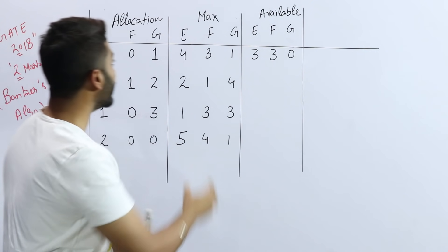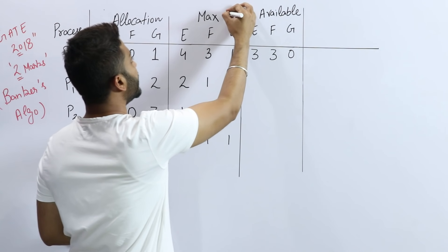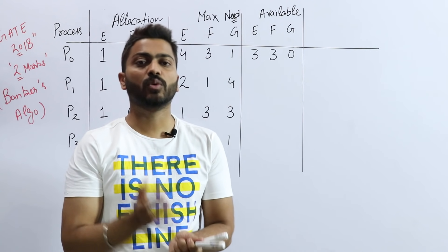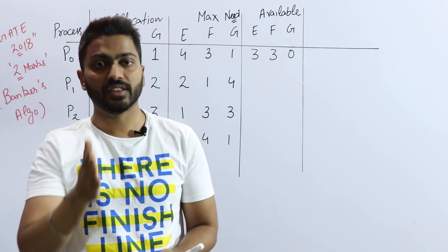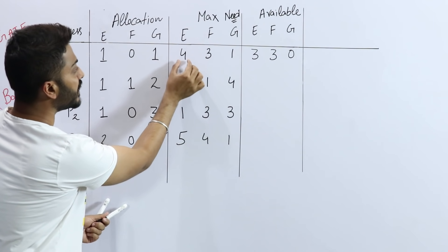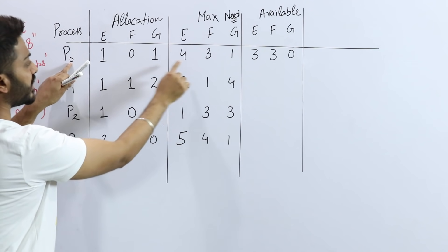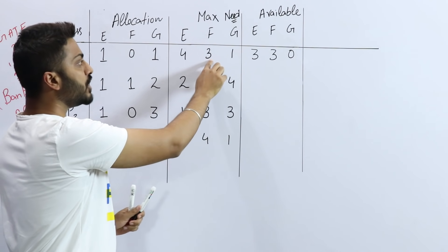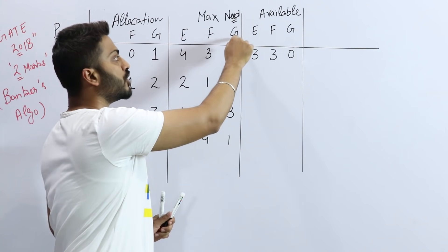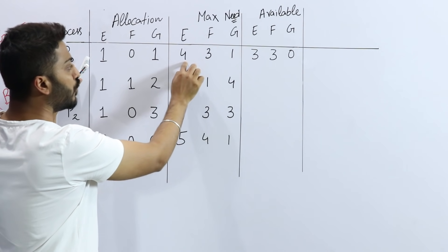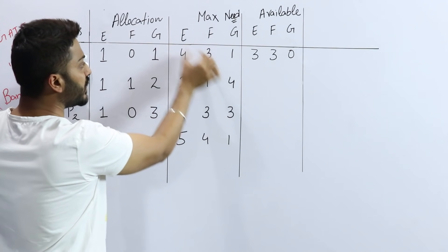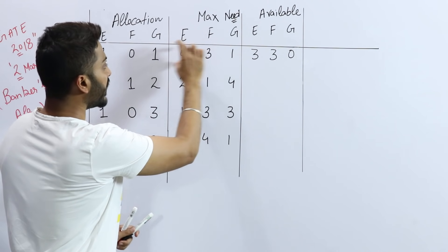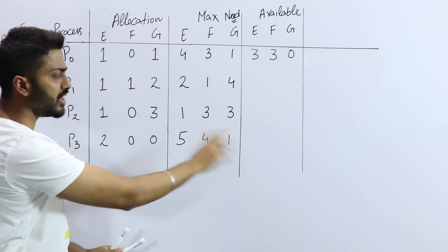We also have the maximum need table — we can call it maximum need. Maximum need means each process declares the maximum number of resources it will ever need to complete execution. For example, P0 is saying it needs 4 units of E, 3 of F, and 1 of G to execute successfully. The same applies to P1, P2, and P3.